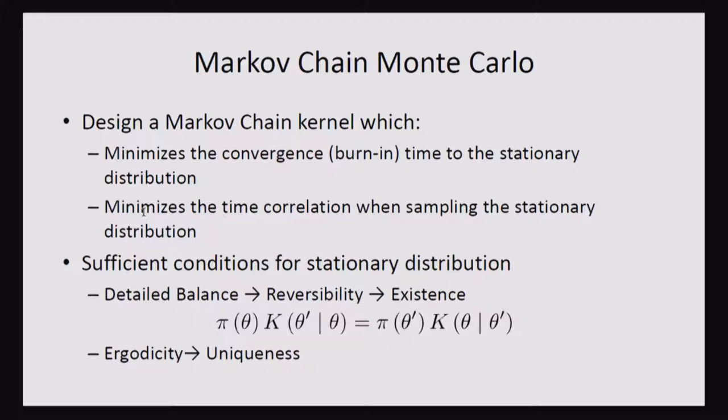And once it's in the stationary distribution, we want to have it such that the correlation between samples is very low, which means that your effective sample size will be high. And when we're designing this Markov chain, we need to ensure that we respect detailed balance.